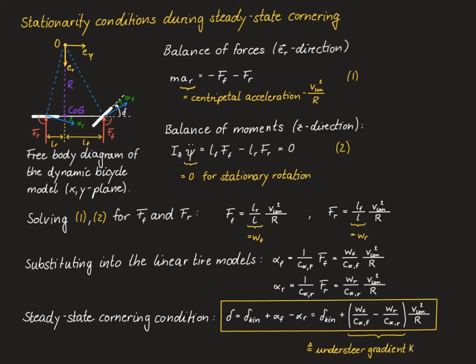Looking at the full formula, the understeer gradient K tells us how the dynamic steering angle delta must change with longitudinal speed to keep the vehicle on a circle of given radius R. More precisely, V²/R is exactly the lateral acceleration for driving on that circle. Therefore, the dynamic steering angle delta is an affine function of lateral acceleration, and the linear factor is exactly equal to the understeer gradient K.